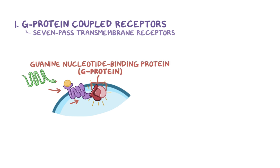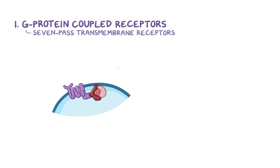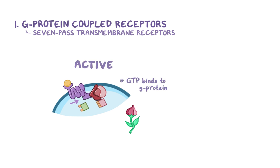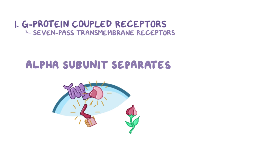G-proteins are made up of three subunits called alpha, beta, and gamma — sort of like a flower with three petals. The alpha and gamma subunits are anchored to the cell membrane and keep the G-protein right next to the receptor. G-proteins bind to guanosine diphosphate, or GDP, when they're inactive; with GDP bound, the three subunits stay together so the flower is closed. But when the ligand binds, the G-protein-coupled receptor changes its shape, allowing the G-protein to release GDP and bind GTP instead, activating the protein. When the alpha subunit is bound to GTP, it separates from the beta and gamma subunits, like one petal opening and separating from the others.